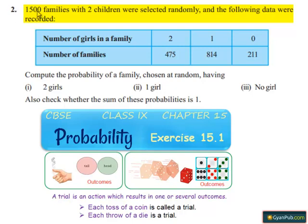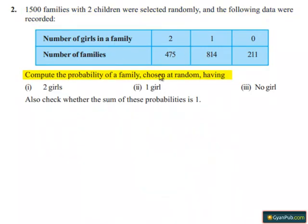Coming to the second question: 1500 families with two children were selected randomly and the following data were recorded in the table. Compute the probability of a family chosen at random having — first, two girls; second, one girl; and third, no girl. Also, check whether the sum of these probabilities is 1.